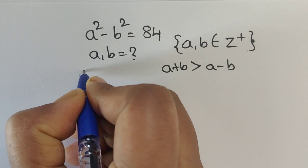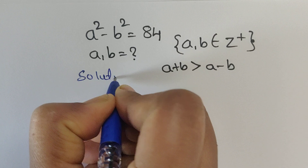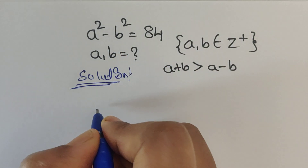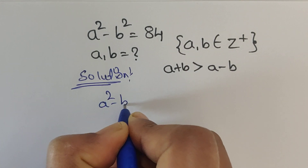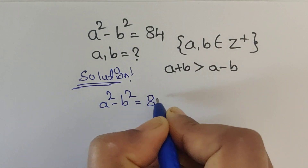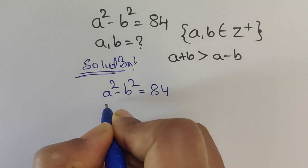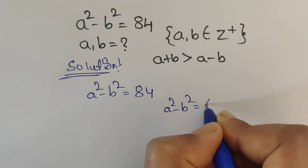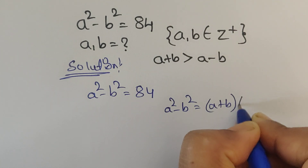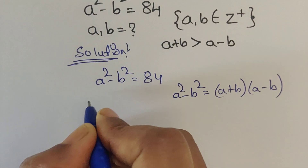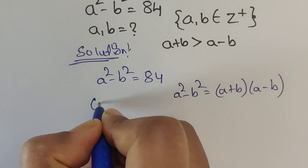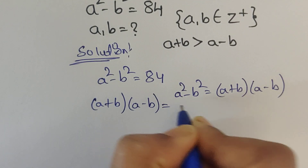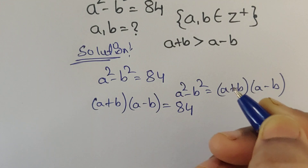So how do we solve this problem? Let's see the solution. Here we have given a squared minus b squared equals 84. We know the formula: a squared minus b squared equals a plus b times a minus b. Using this formula, we can write a plus b times a minus b equals 84.